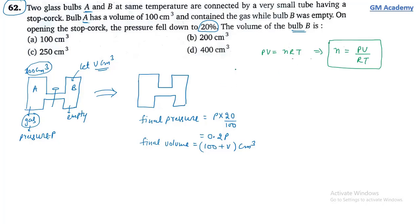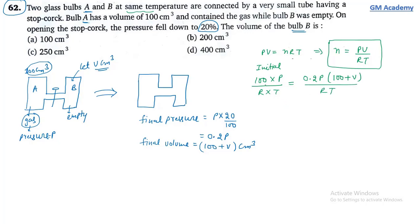Initial: P × 100 / RT = moles. Final: 0.2P × (100 + V) / RT. Setting these equal and cancelling P, R, T: 100 = 0.2 × (100 + V). Solving: V = 400 cm³. Volume of bulb B = 400 cm³. Option D is correct.